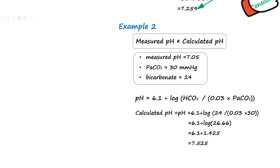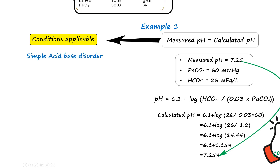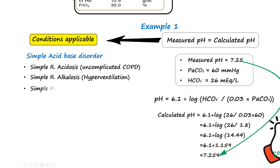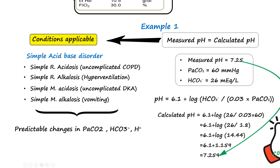The first example is applicable for conditions with simple acid-base disturbances without major interference from unmeasured factors. Examples include uncomplicated respiratory acidosis such as in COPD, simple respiratory alkalosis due to hyperventilation, isolated metabolic acidosis like early diabetic ketoacidosis before severe ketone accumulation, and straightforward metabolic alkalosis from vomiting or diuretic use. In these situations, the relationship between bicarbonate, carbon dioxide, and hydrogen ion concentration remains predictable, allowing the Henderson-Hasselbalch equation to accurately calculate a pH that closely matches the pH directly measured by the ABG machine.